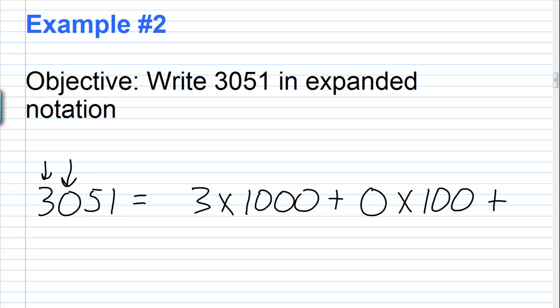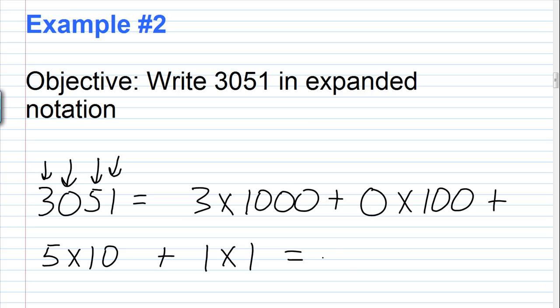So we move to the next digit to the right and we have a 5, and the 5 is in the tens place, so we'll have 5 times 10. Then we move to the next digit to the right, that's a 1, and the 1 is in the ones place, so we'll have 1 times 1. So 3 times 1000 would be 3000, 0 times 100 is 0 so I can just leave that blank, then 5 times 10 would be 50, and 1 times 1 which is 1. So 3051 written in expanded notation is 3000 plus 50 plus 1.